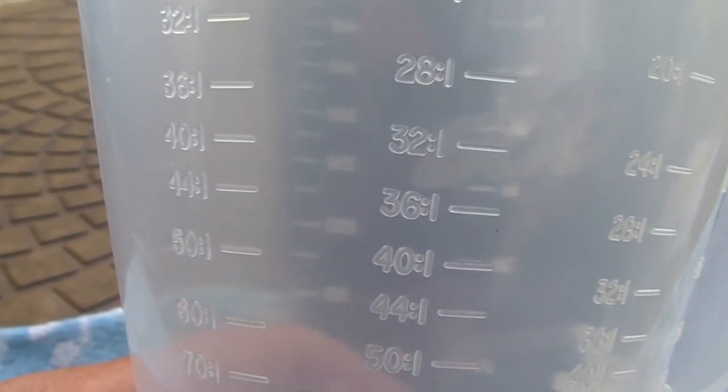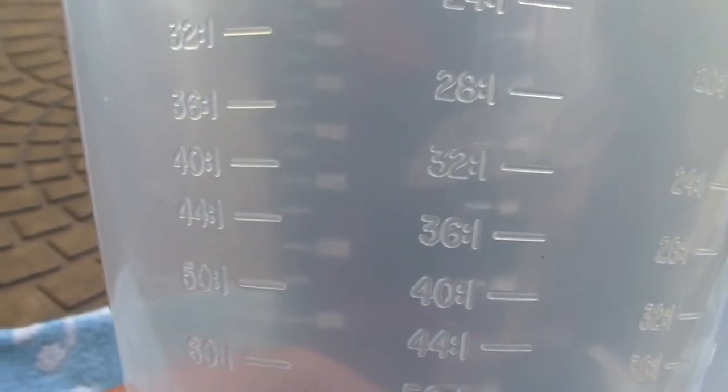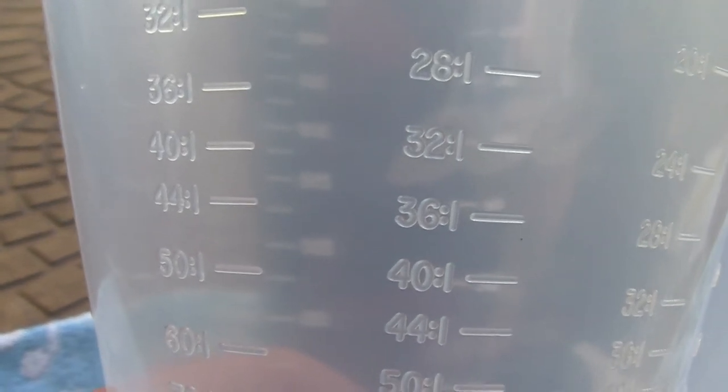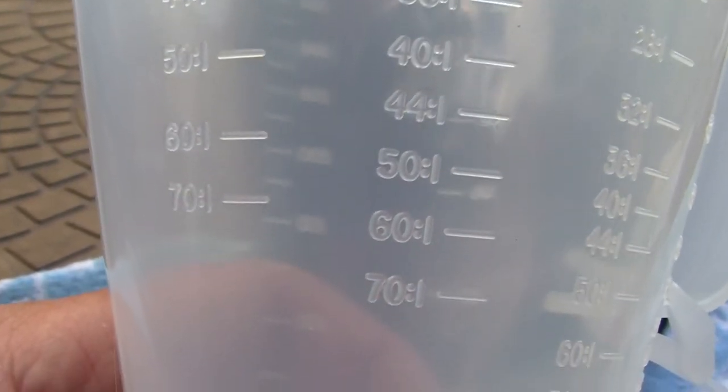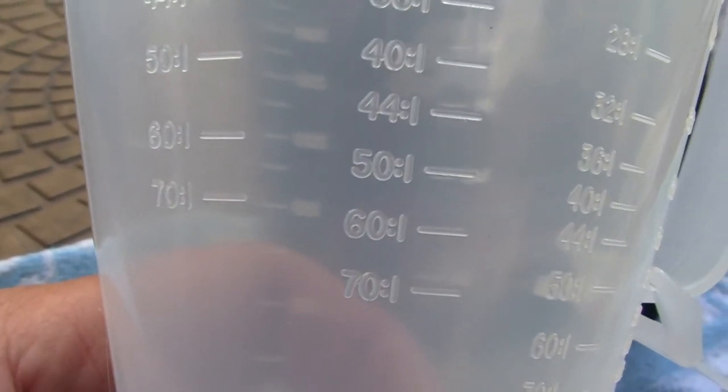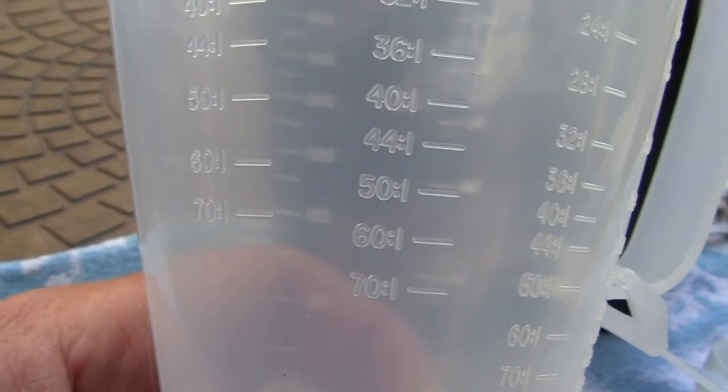But what we're going to look for in motocross is we're going to run either 40 to 1, right there, or we're going to run 50 to 1. 60 and 70 to 1, I don't know what you're running, but you're probably running out of rings real quick.